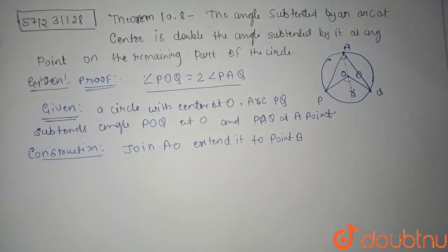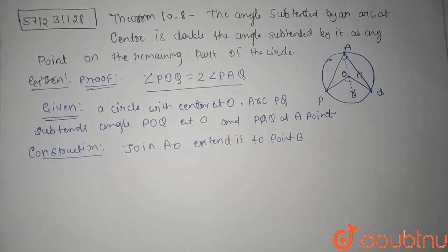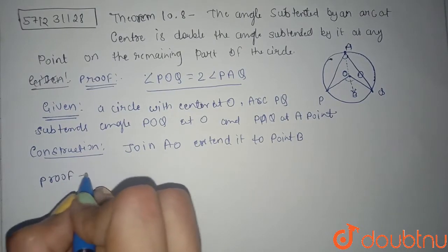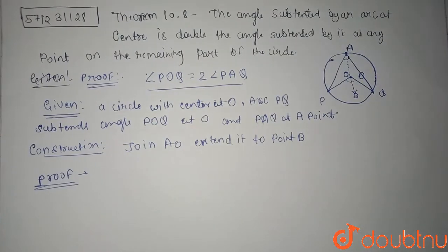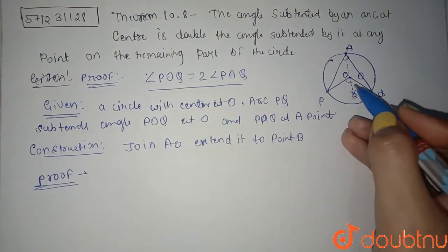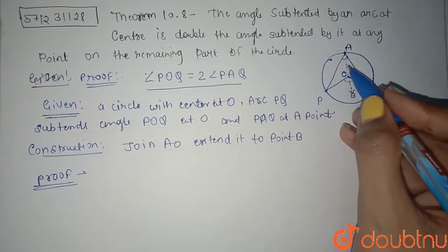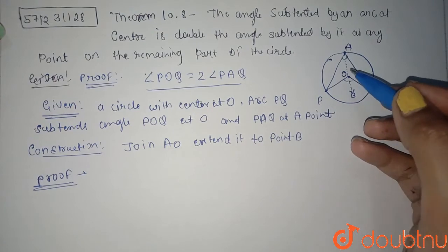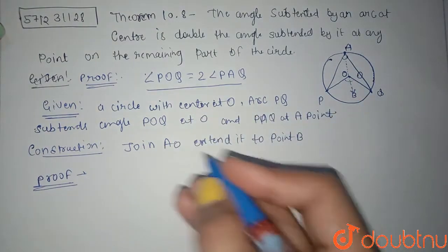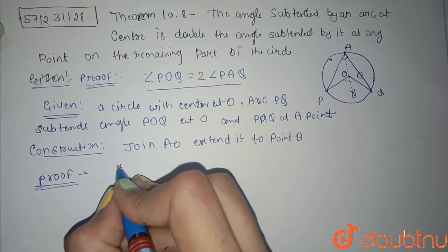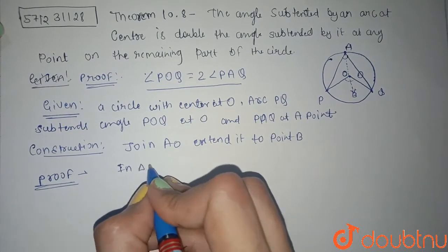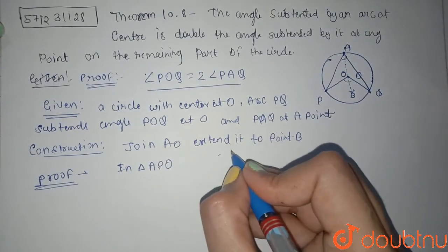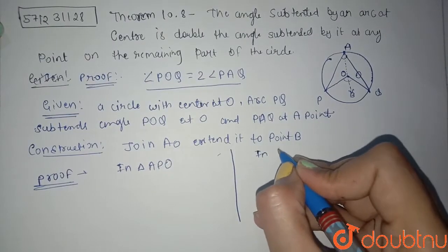After this we come to the proof part. Why I have constructed this - because I need it. I'm thinking of having two triangles here and from them I'll see what I can further conclude. So I have two triangles: triangle APO and another triangle AQO.